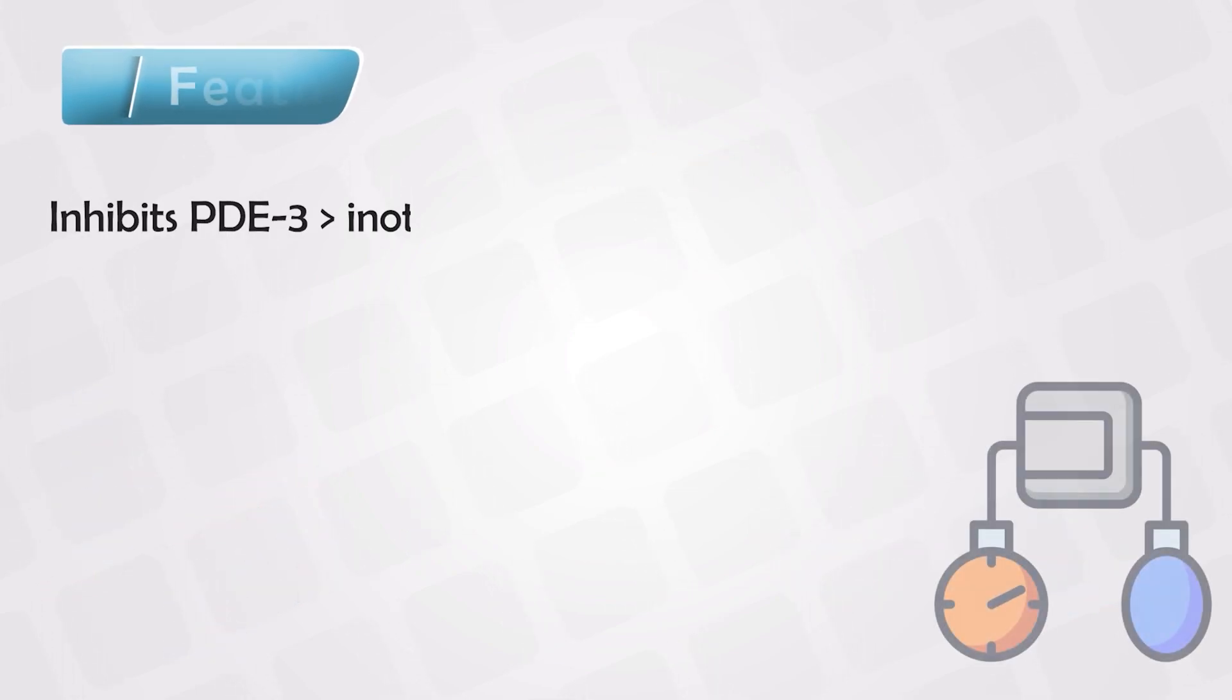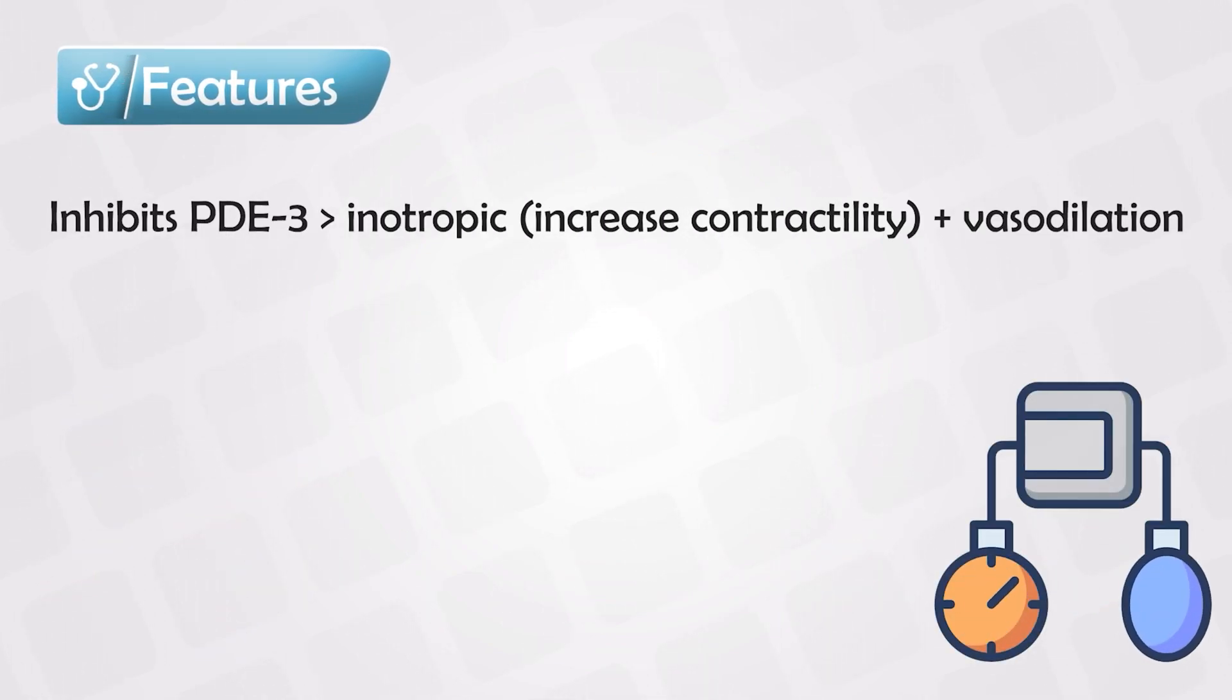Melurinone works by selectively inhibiting the phosphodiesterase 3 enzyme. This enzyme is mainly found in the cardiomyocytes, so the main effect of the medication is on the heart, but it also has some effects on the vessels.